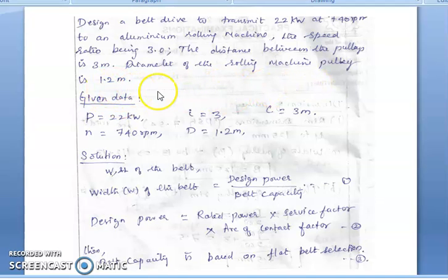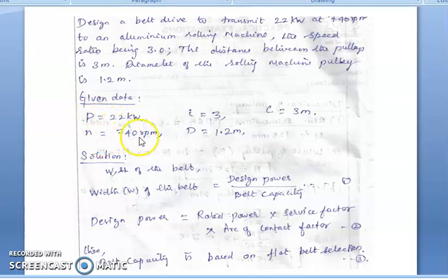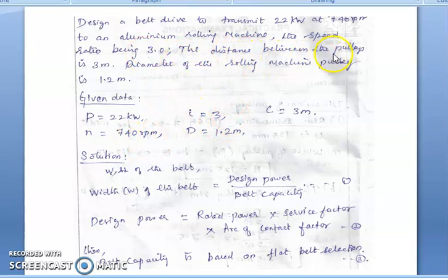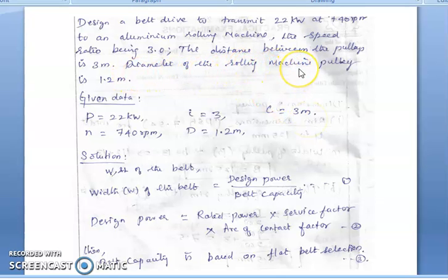The given data: power P = 22 kW, speed of the driver member N = 740 rpm, speed ratio i = 3, center distance C = 3 meters. The rolling machine is the driven member, so its diameter is capital D = 1.2 meters.